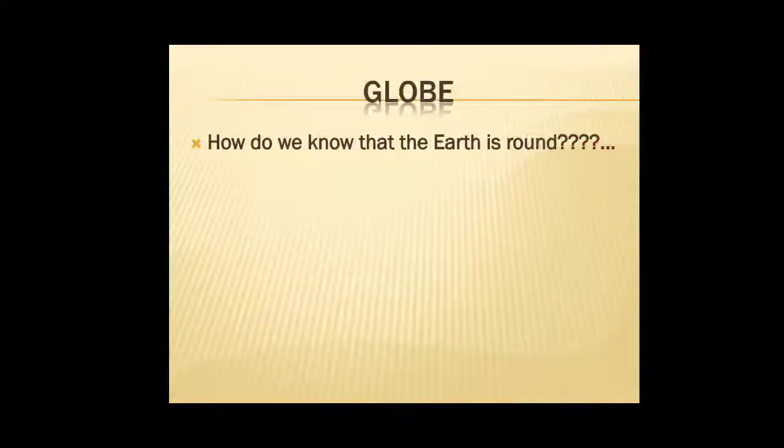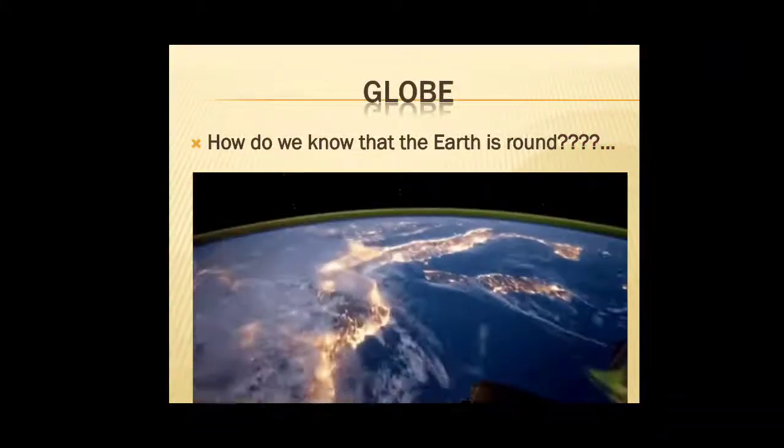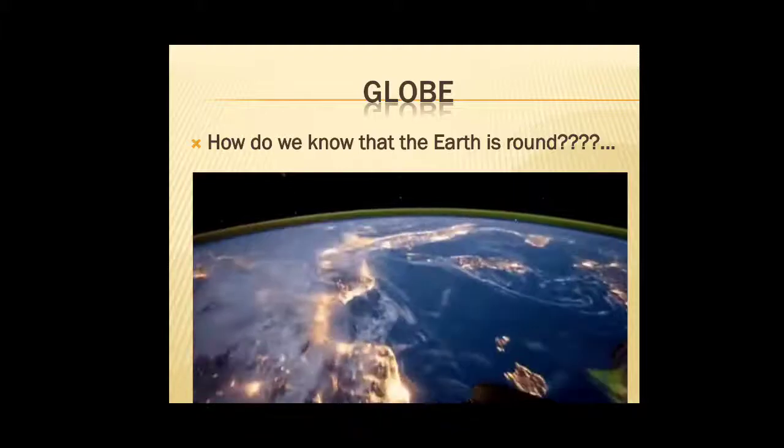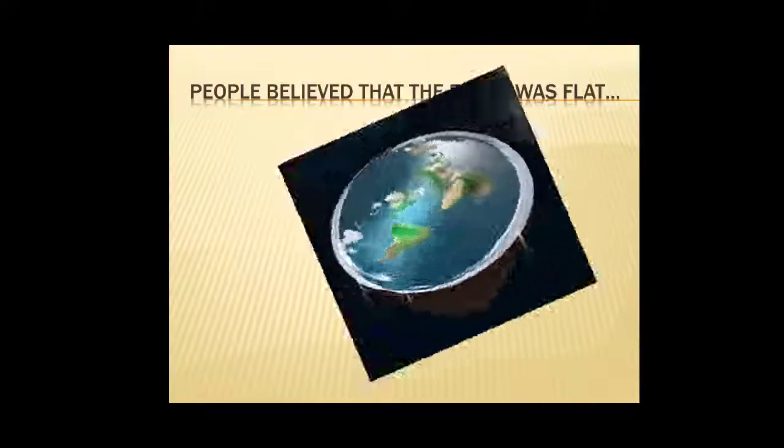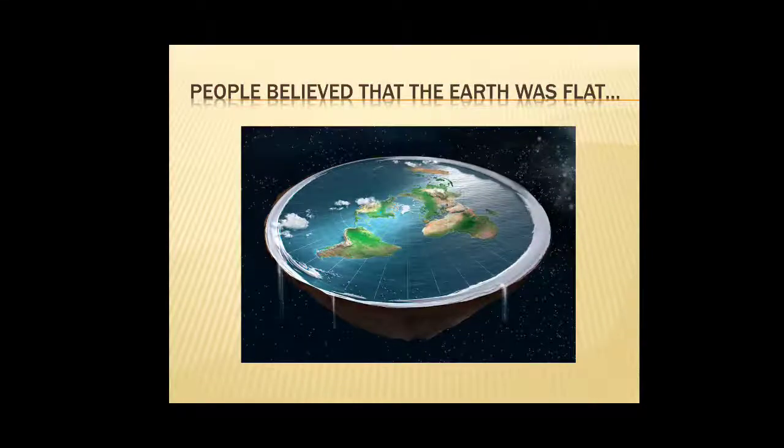Next topic is about globe. How do we know that the earth is round? Yes, we know this through pictures of the earth taken from space. However, hundreds of years ago, people believed that the earth was flat. They thought that the horizon or the point where the land and sky appear to meet was the edge of the earth. And they could fall off the edge if they reached it. It seems funny now as we know that our earth is round in shape like a ball.